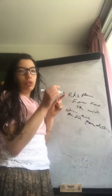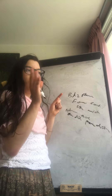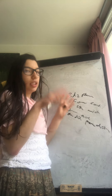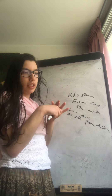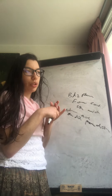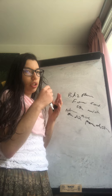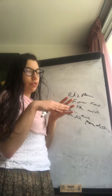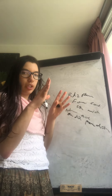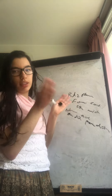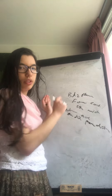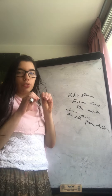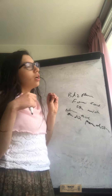Sometimes in acute dystonia there could be other things associated, like movement of the eyes looking upward and being unable to move them. So this is a focal dystonia — the blepharospasm, this forceful contraction of the eyelids.